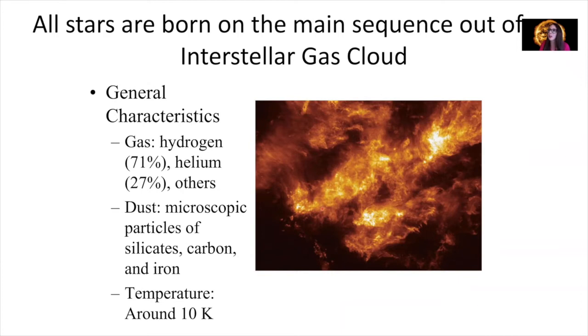So these interstellar gas clouds from which stars are formed, they're mostly hydrogen, a little bit of helium, so 70% hydrogen, 30% helium, and then just a tad of other things. There's also some dust there, microscopic particles of silicates, those are like rocky bits, carbon, and iron.